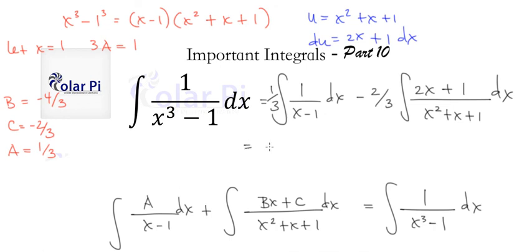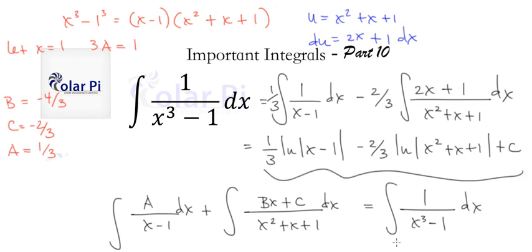Because we just have a third ln of x minus 1 plus C. But we'll wait on the plus C. And then minus 2 thirds ln of x squared plus x plus 1. And then plus C. This is our final answer. I hope you enjoyed this. And take care.